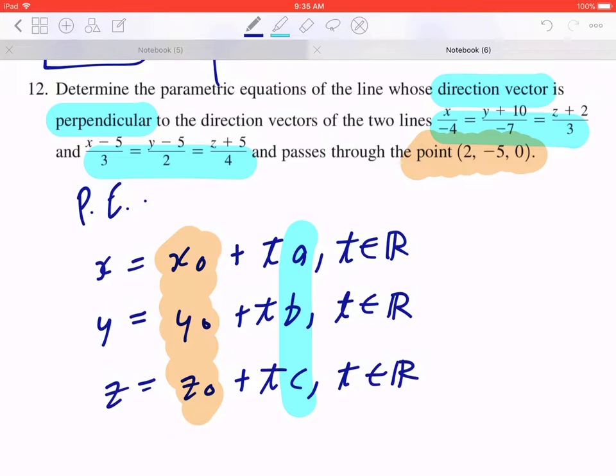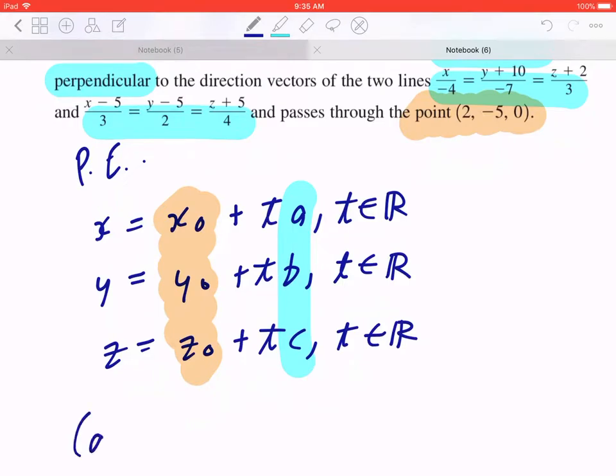So when you look at (a, b, c), this equals (-4, -7, 3) cross (3, 2, 4).